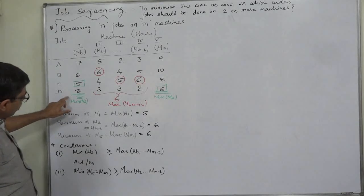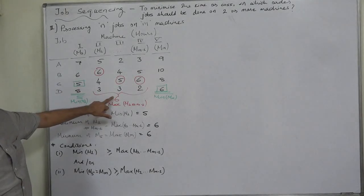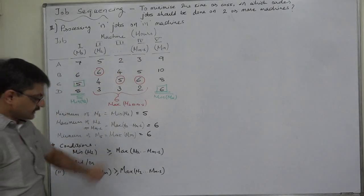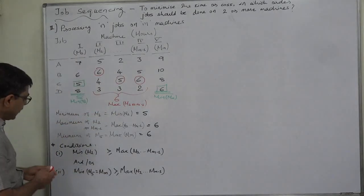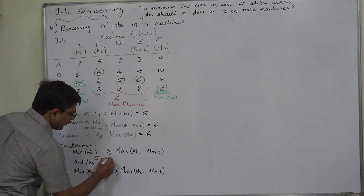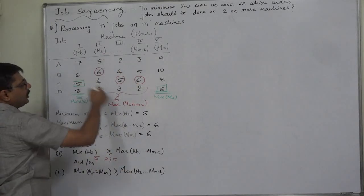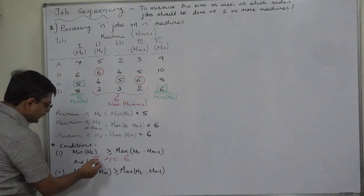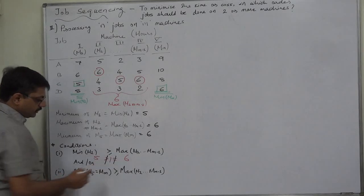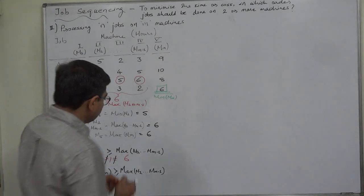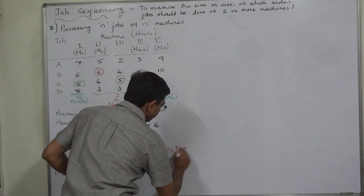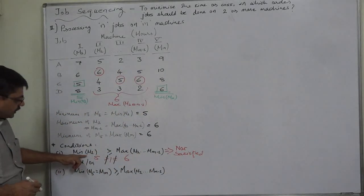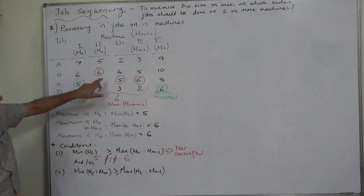That means the minimum time on machine one should be greater than or equal to the maximum time on all those intermediate machines, which is six. The minimum time on machine one is five, and the maximum time on all three intermediate machines is six. Five is not greater than six and five is not equal to six, so we conclude that condition one is not satisfied — because the minimum time on machine one is less than the maximum of all machines except the last.